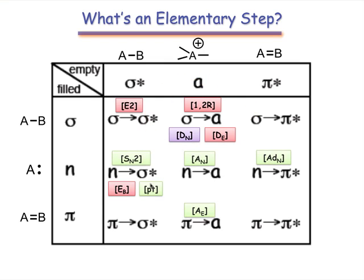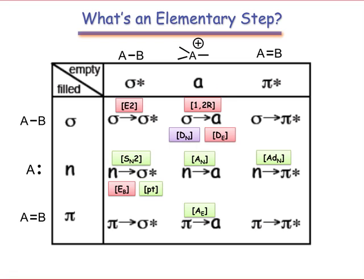Finally, here are the elementary steps involving sigma-type interactions. Interestingly, the s-in-2, p-t, and e-b steps all involve n-to-sigma-star interactions. The only difference between them is based on the nature of the sigma-star orbital and whether the process is intra- or intermolecular.